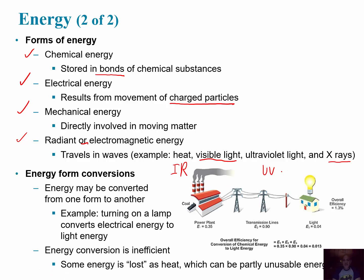We can convert energy from one form to another. When we turn on a lamp, we're converting electrical energy to light. However, energy conversion is never 100% efficient. If you've ever touched a light bulb that's been on a while — even new LEDs — they give off a lot of heat. Most energy is lost as heat, so they're more like heat bulbs. When we convert from one form of energy to another, we always lose energy from the system as heat, which is not usable.